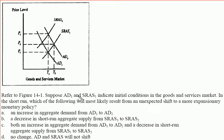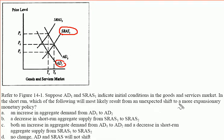Referring to this figure, suppose AD1, which I'll go ahead and circle, and SRAS1 indicate the initial conditions in the goods and services market. Now, in the short run, which of the following will most likely result from an unexpected shift to a more expansionary monetary policy?